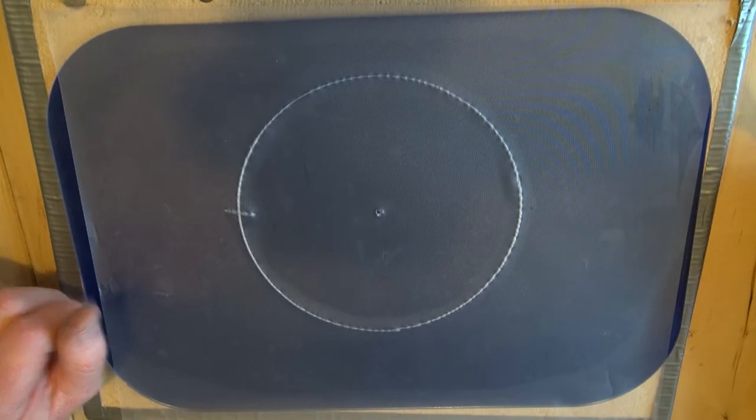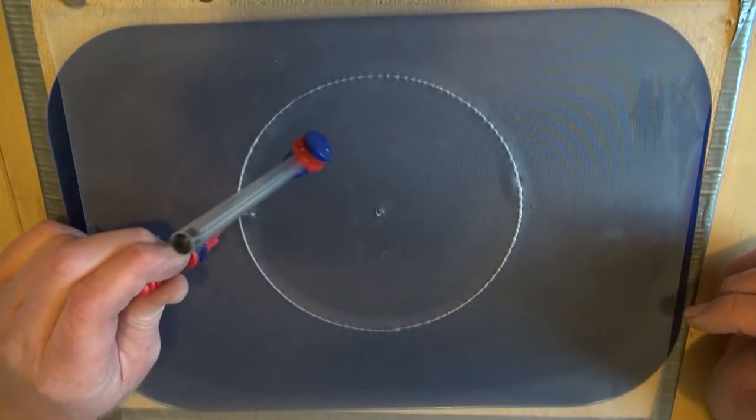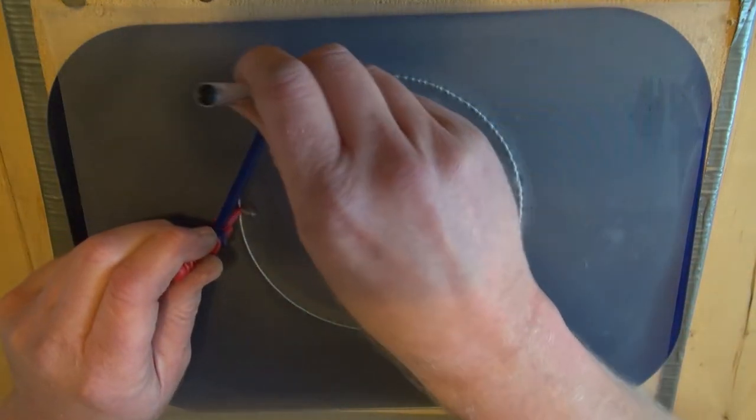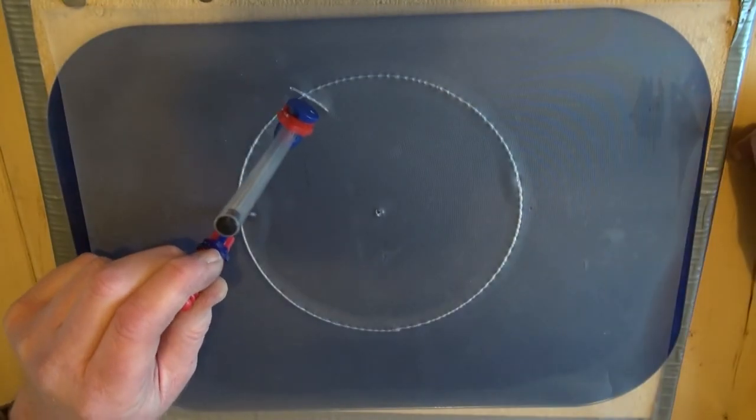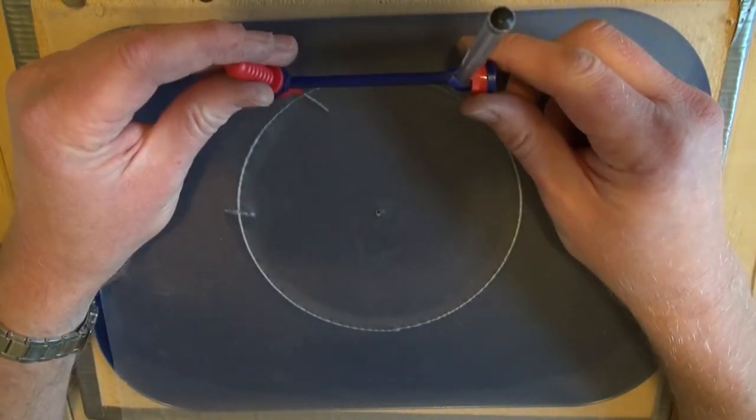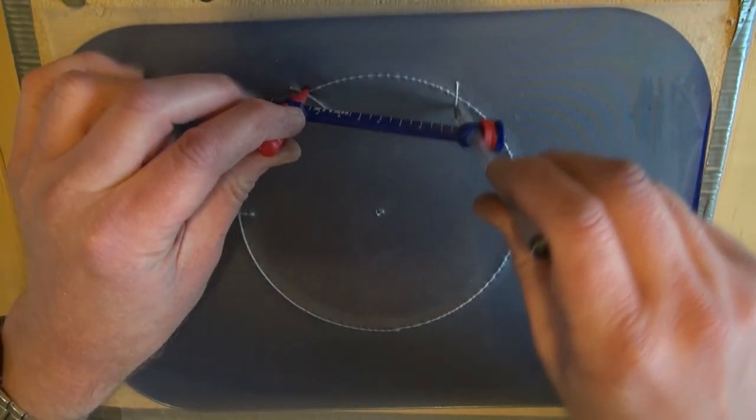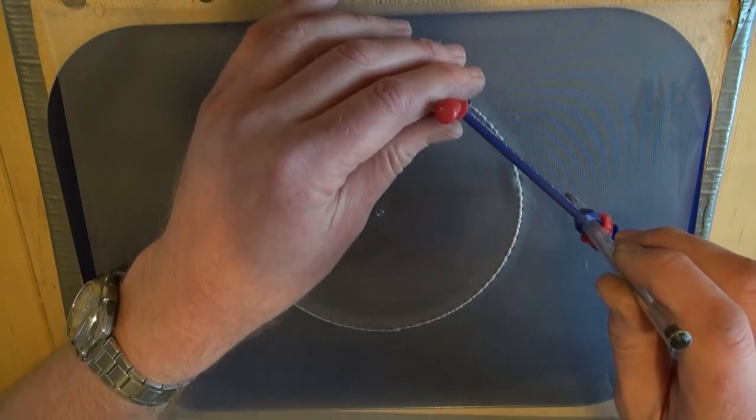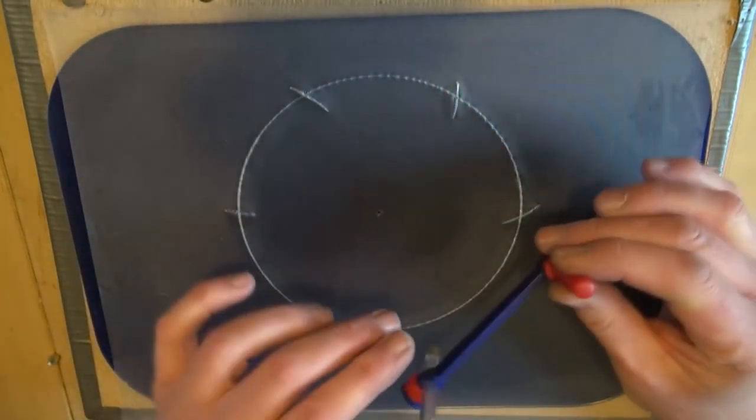And I'm going to put the centre of my compass on it. And draw a small arc of a circle just there. I'm going to move around to that position. And draw another arc of a circle just there. And so on. And so on.